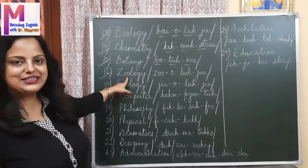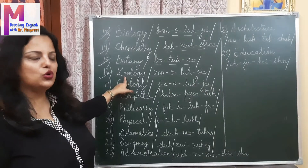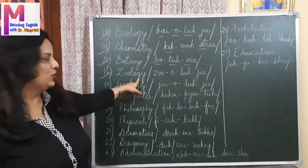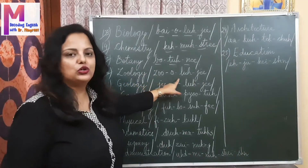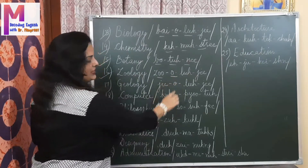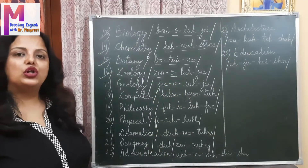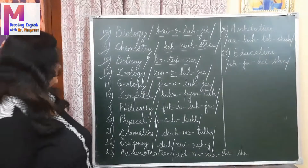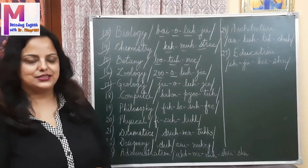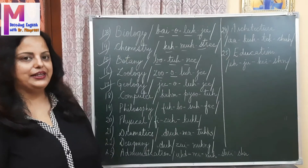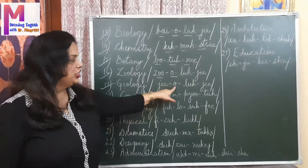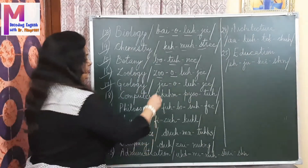Coming to number 16, we have zoology. No, it's 'zoology', 'zoology' — giving a stress here: 'zoology'. Then next is geology — that's what people pronounce it as, but no, it's wrong. It has to be pronounced as 'ge-o-lo-gy', 'ge-o-lo-gy'.